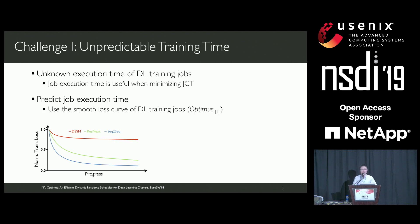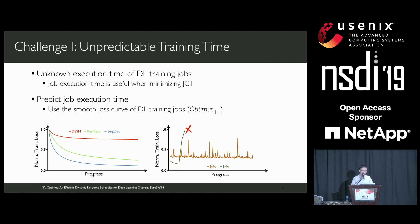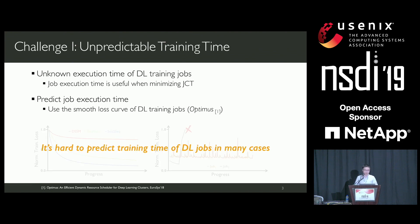However, this method is not valid in many cases. Deep learning models are often built in a trial-and-error manner, meaning many jobs are just trials. The models may have errors or bad configurations, making their training loss non-smooth—just like this example. Because of this, many jobs will be terminated by their users at the earliest stage without completion, and only a small portion of jobs run to completion. This makes it hard to predict training time in many cases.